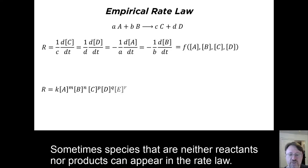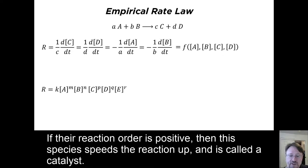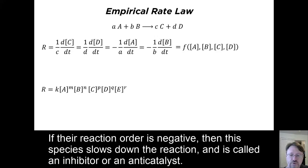Sometimes species that are neither reactants nor products can appear in the rate law. If their reaction order is positive, then this species speeds up the reaction and is called a catalyst. If their reaction order is negative, then this species slows down the reaction and is called an inhibitor or an anti-catalyst.